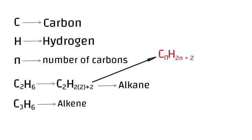And here's another example. We have C₄H₆. Take that 4 — our number of carbons — and multiply it by 2, which gives us 8. To get to 6 when you have 8, you minus by 2. So in this case it's an alkyne. This will be helpful in multiple choice questions — please make sure you understand this.